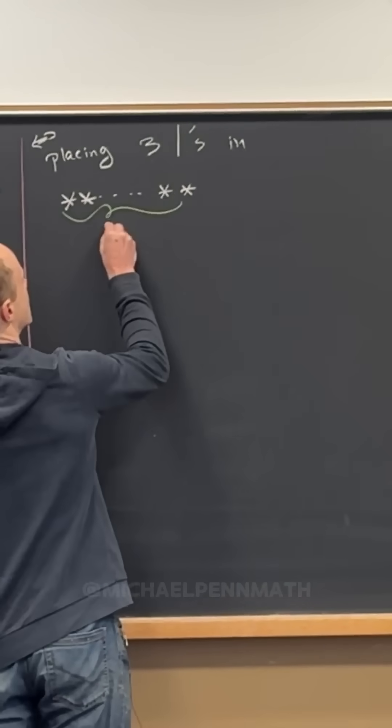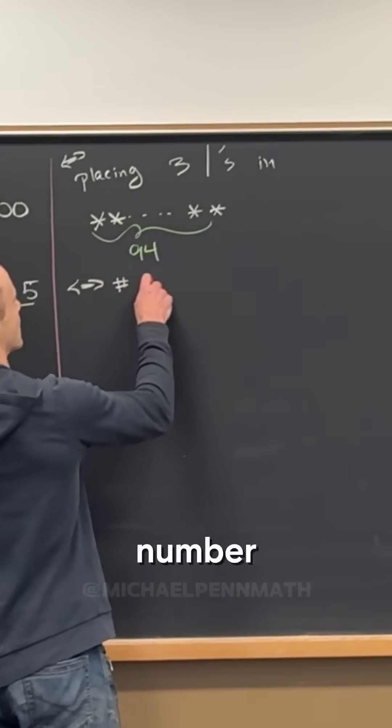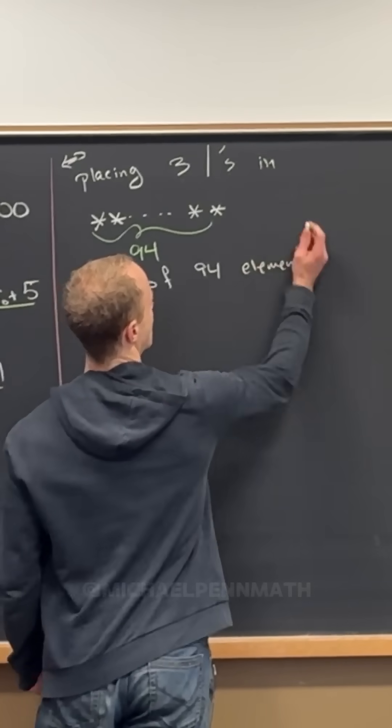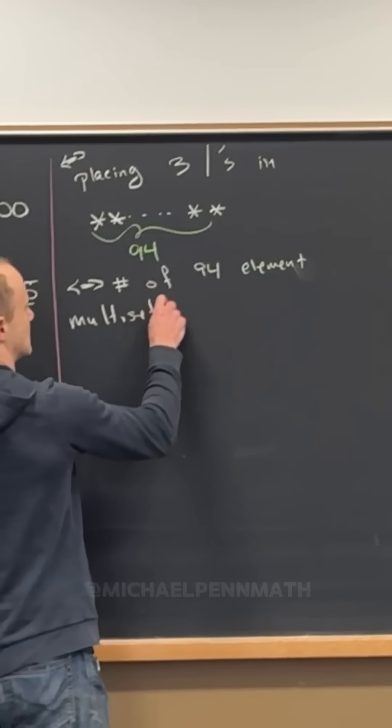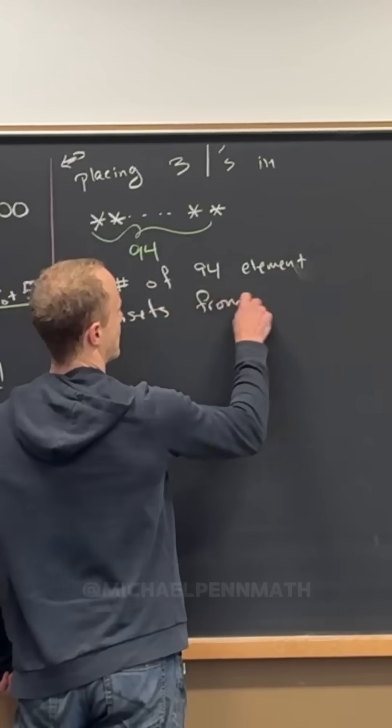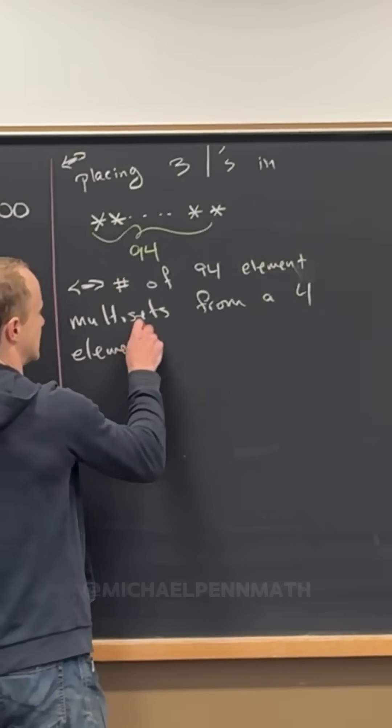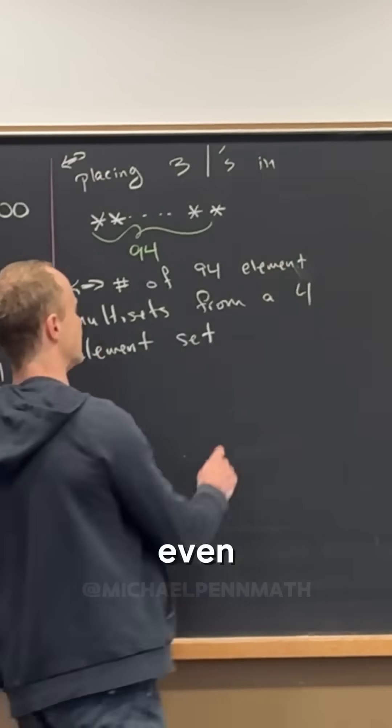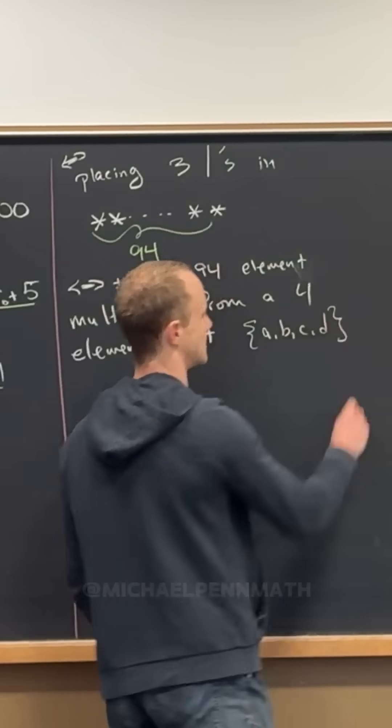94 stars, right? So that's the equivalent of the number of 94 element multisets from a 4 element set, right? And then maybe we could even call that 4 element set, a, b, c, d, right?